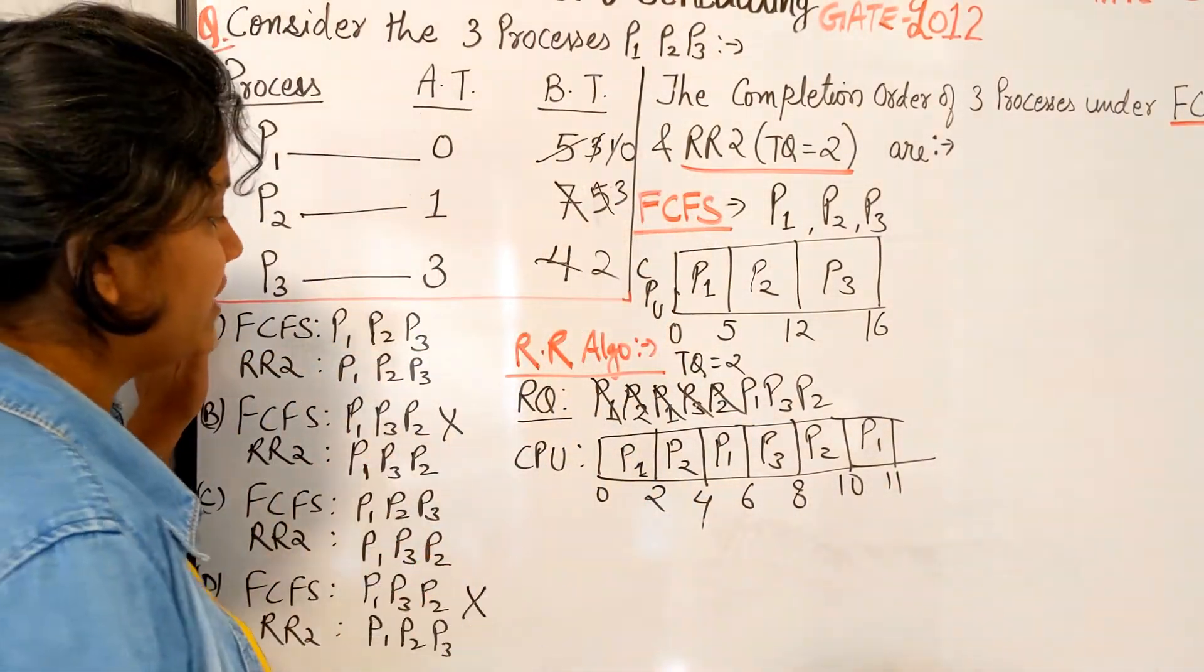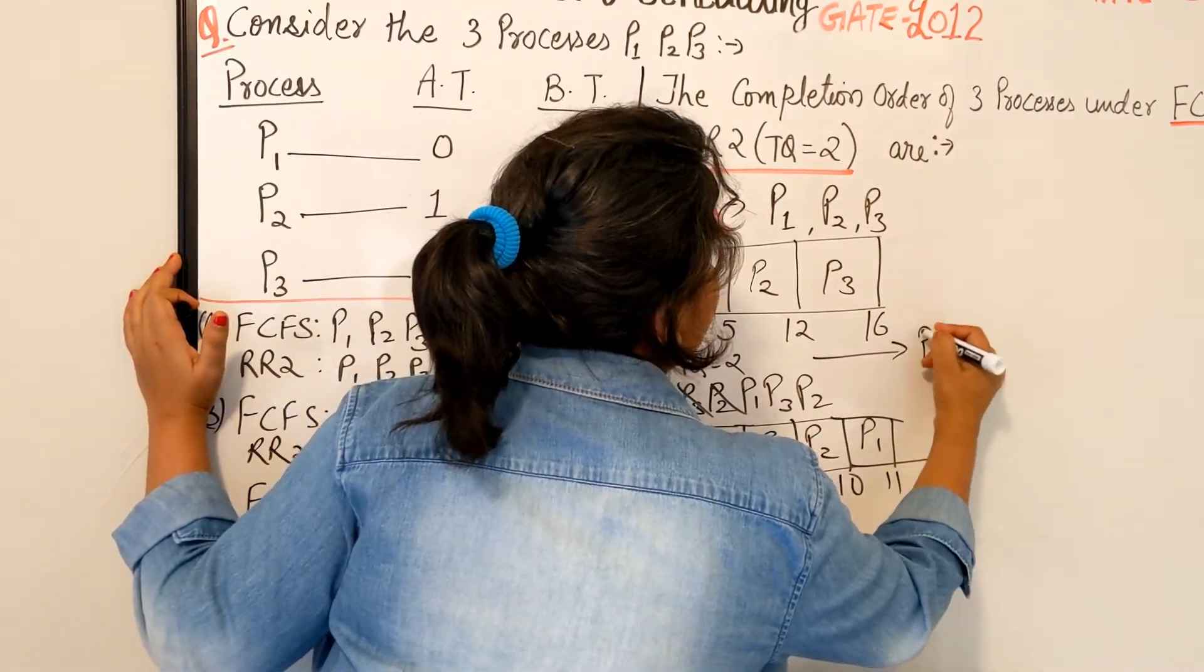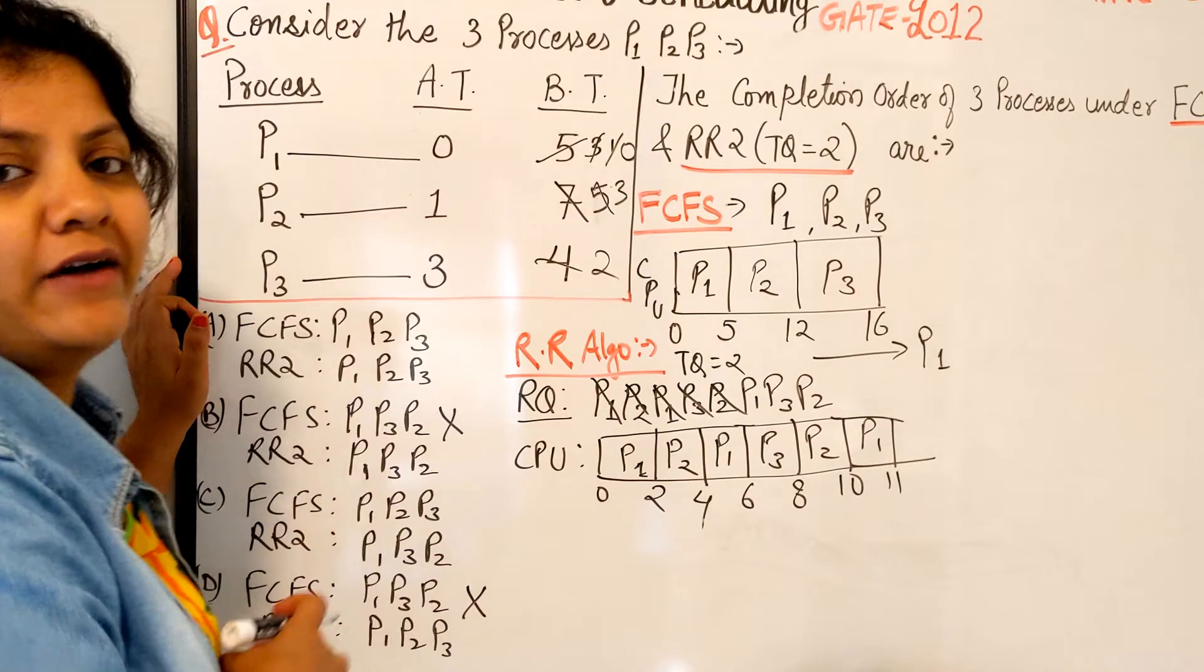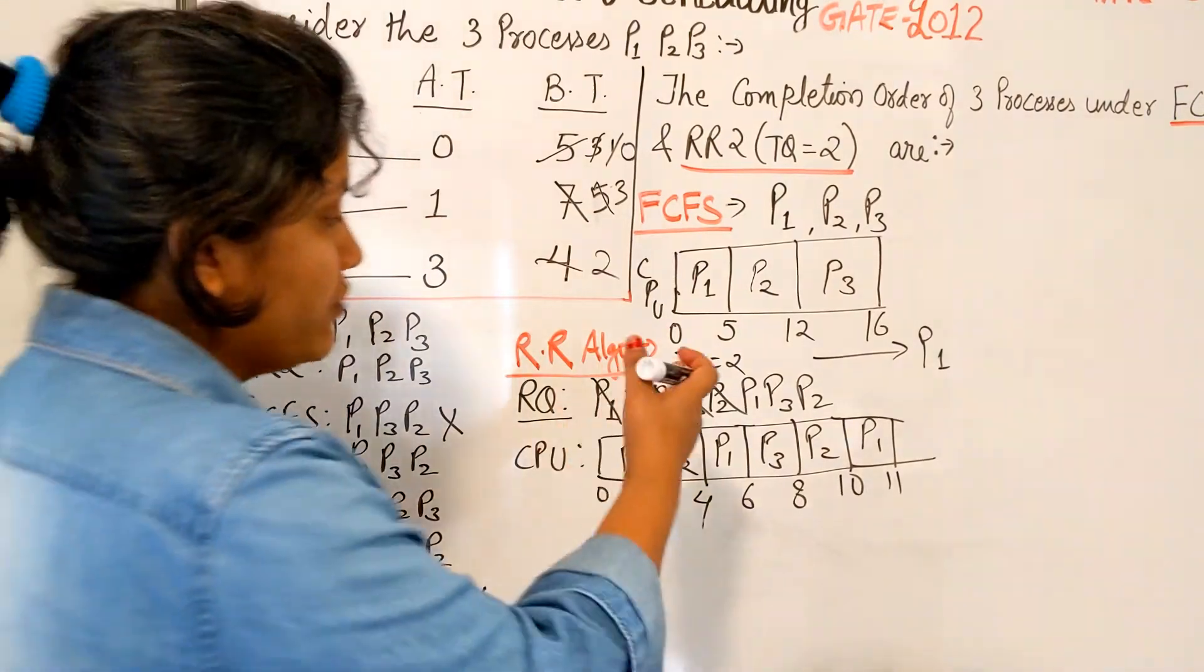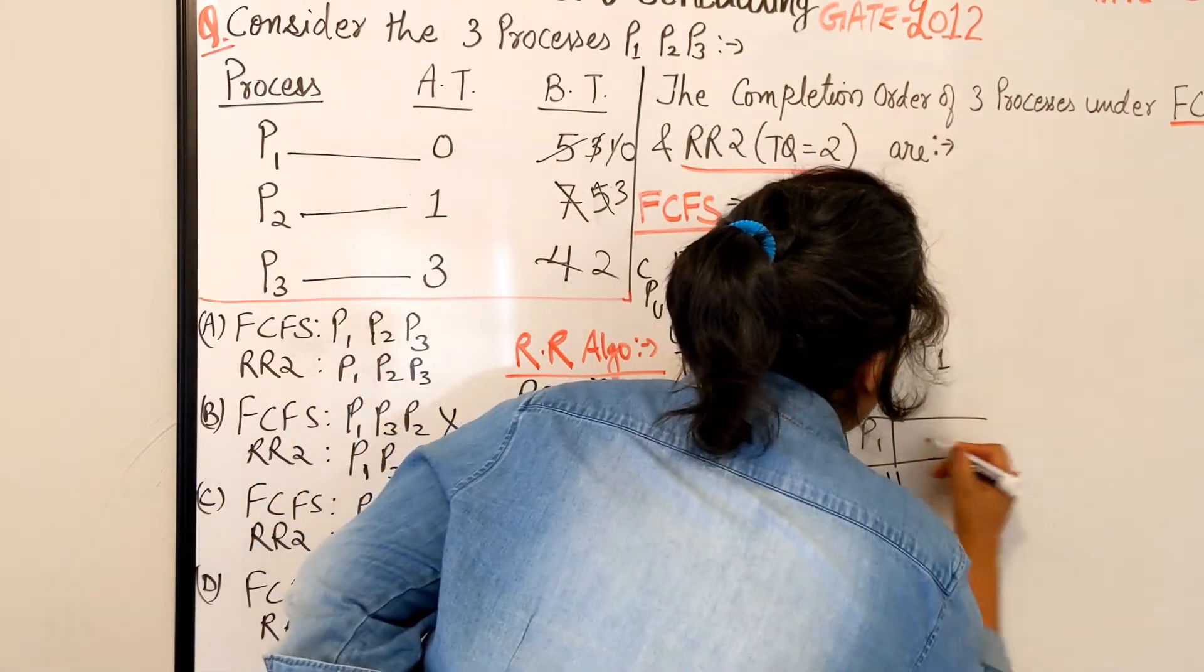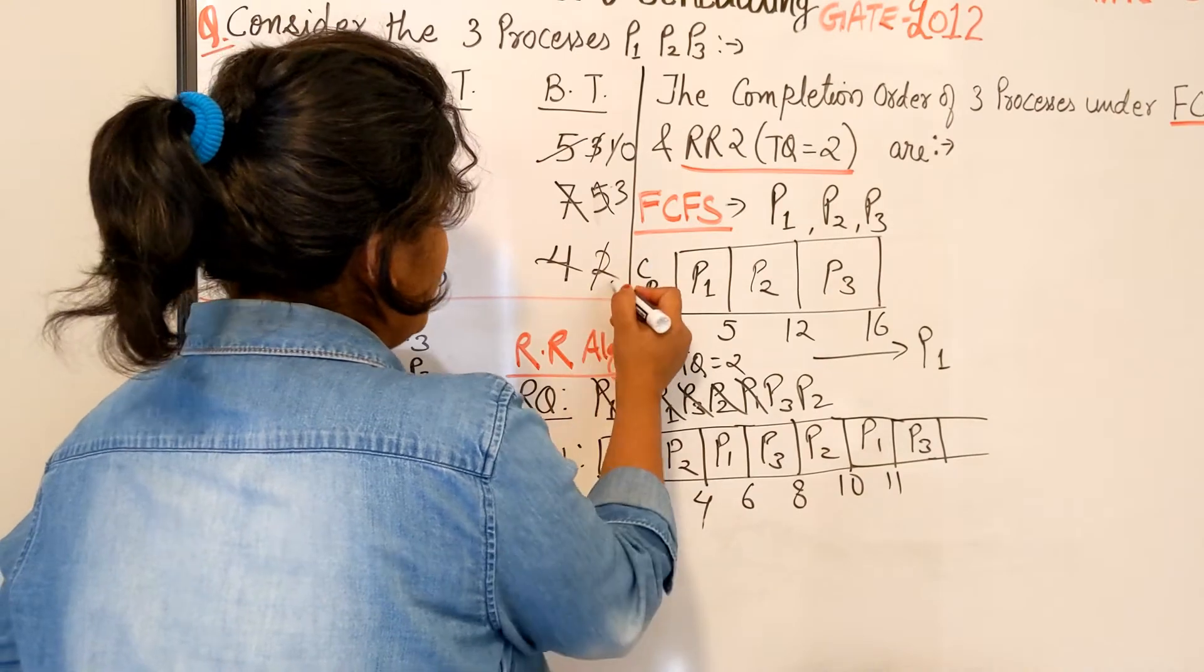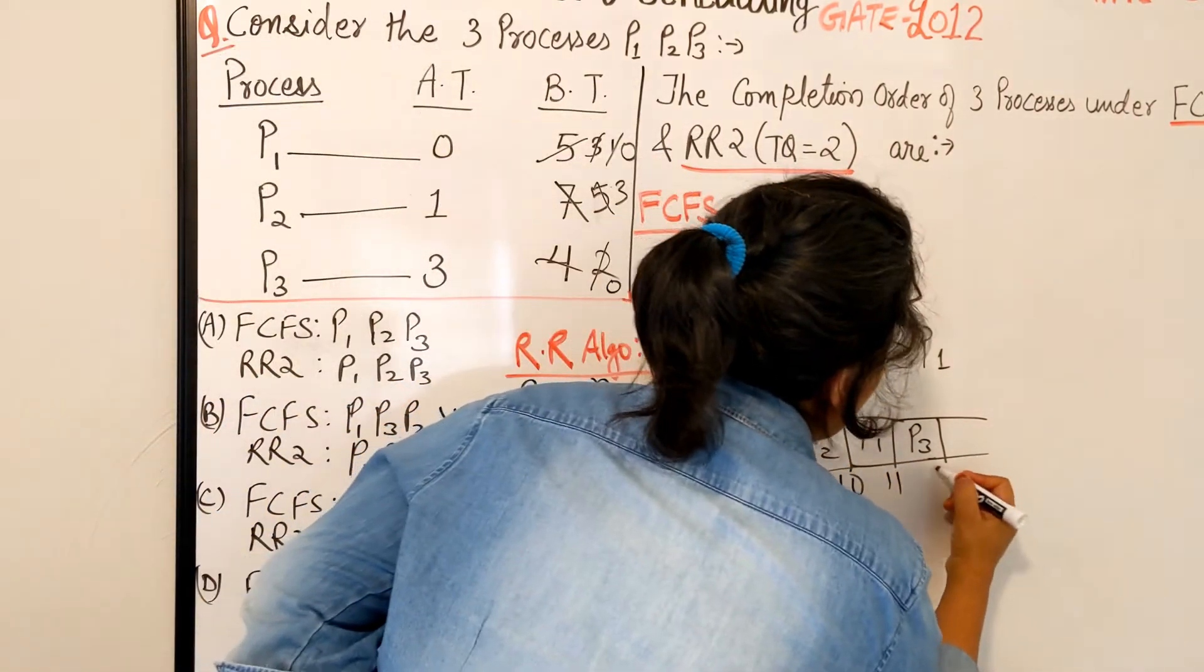So here the first completed process is P1. In the order we are going to have P1 first, but we have to finish all of them. P1 is done, next is P3. P3, how much do you need? 2, becomes 0, 11 plus 2 equals 13, it's finished. So next in order is P3.